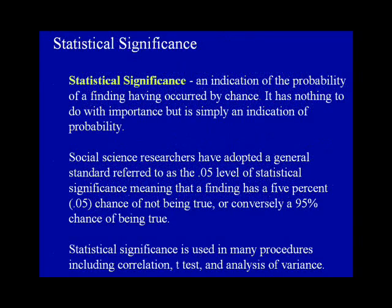Statistical Significance. Statistical significance is an indication of the probability of a finding having occurred by chance. It has nothing to do with importance, but is simply an indication of probability. Social science researchers have adopted a general standard referred to as the .05 level of statistical significance, meaning that a finding has a 5% chance of not being true or, conversely, a 95% chance of being true. Statistical significance is used in many procedures, including correlation, t-test, and analysis of variance.